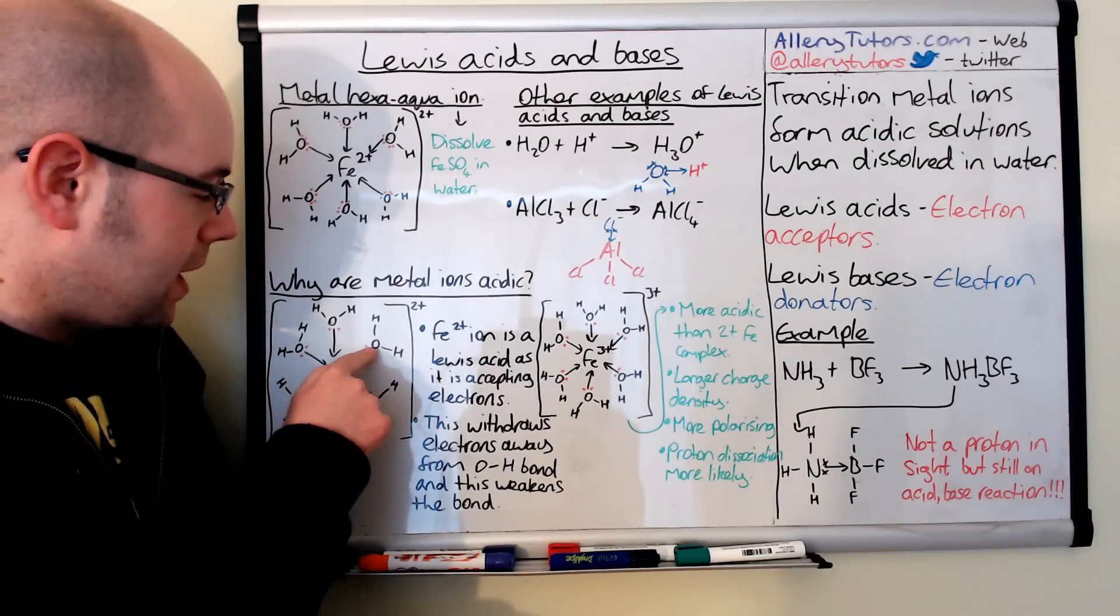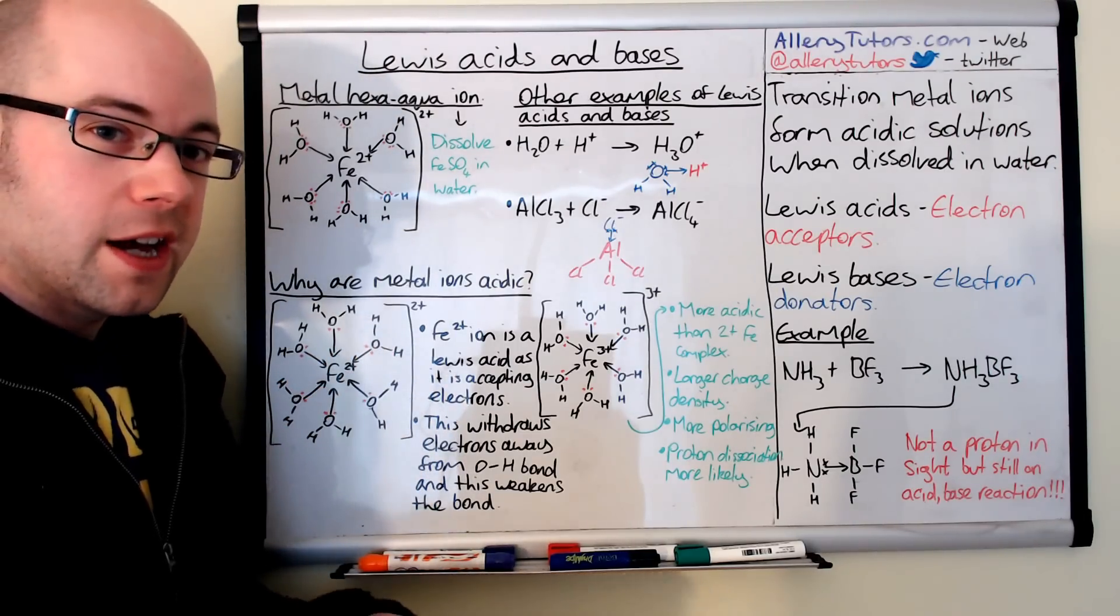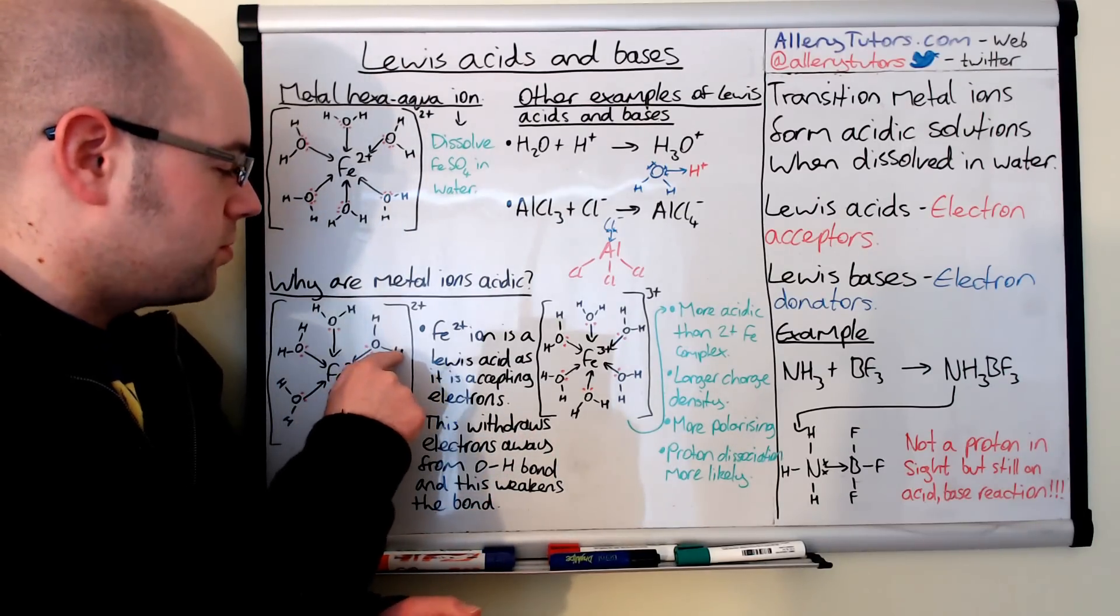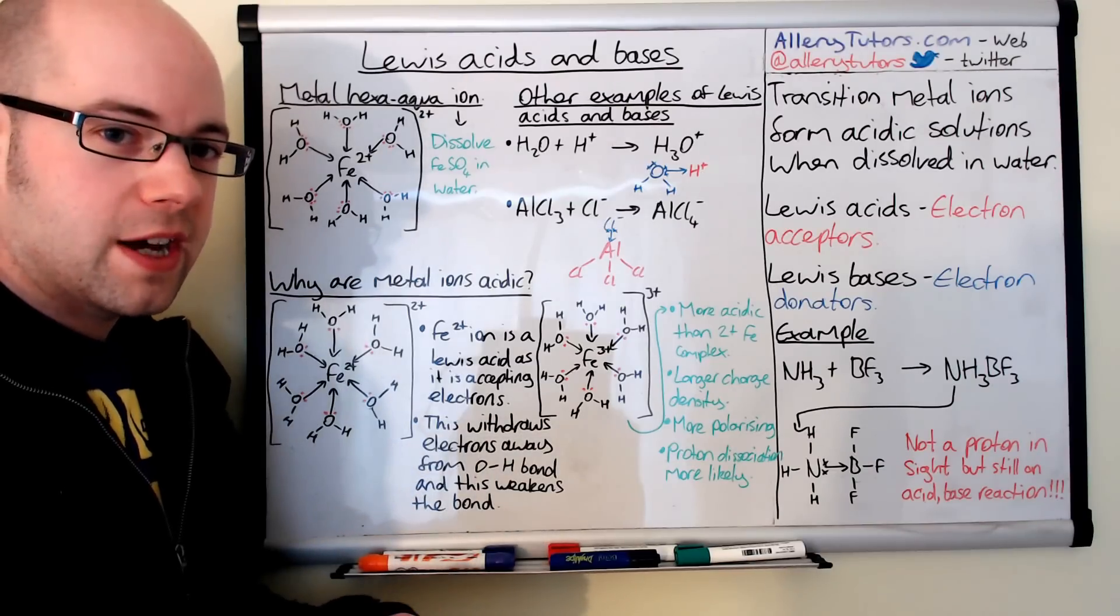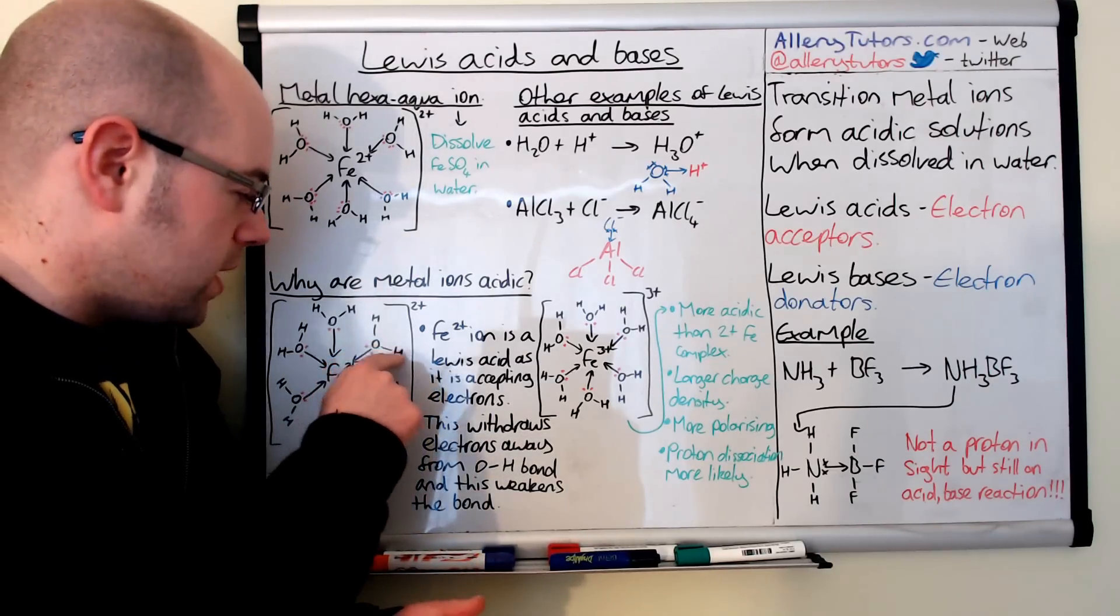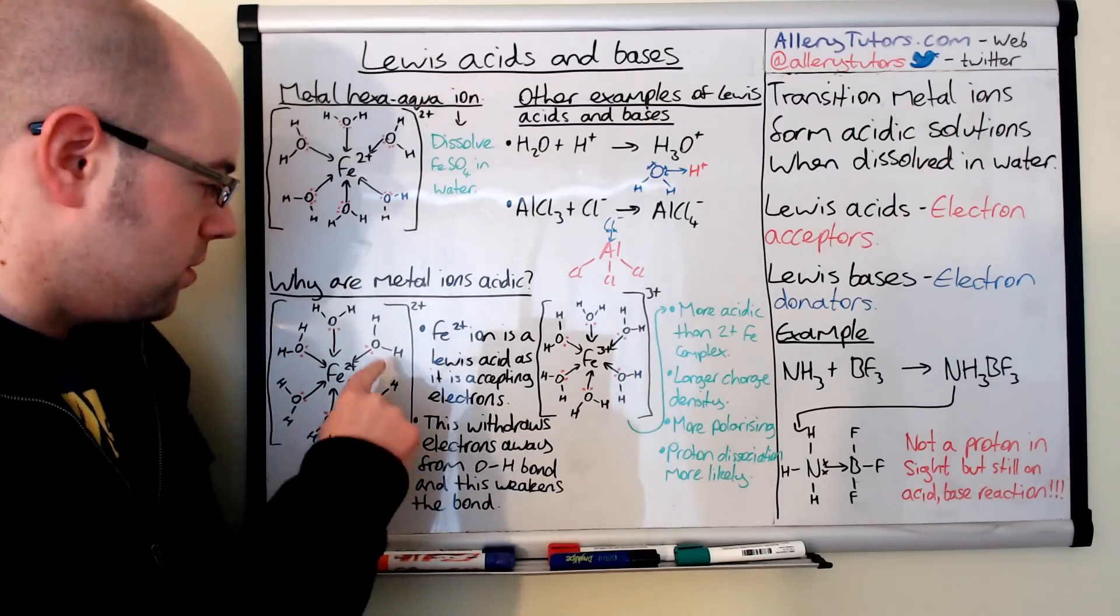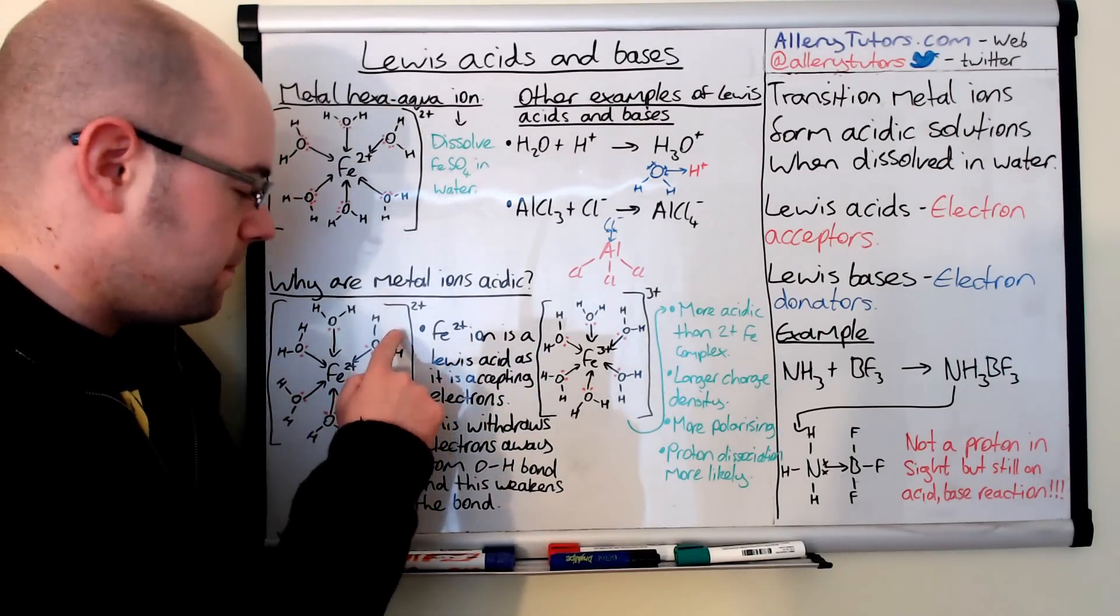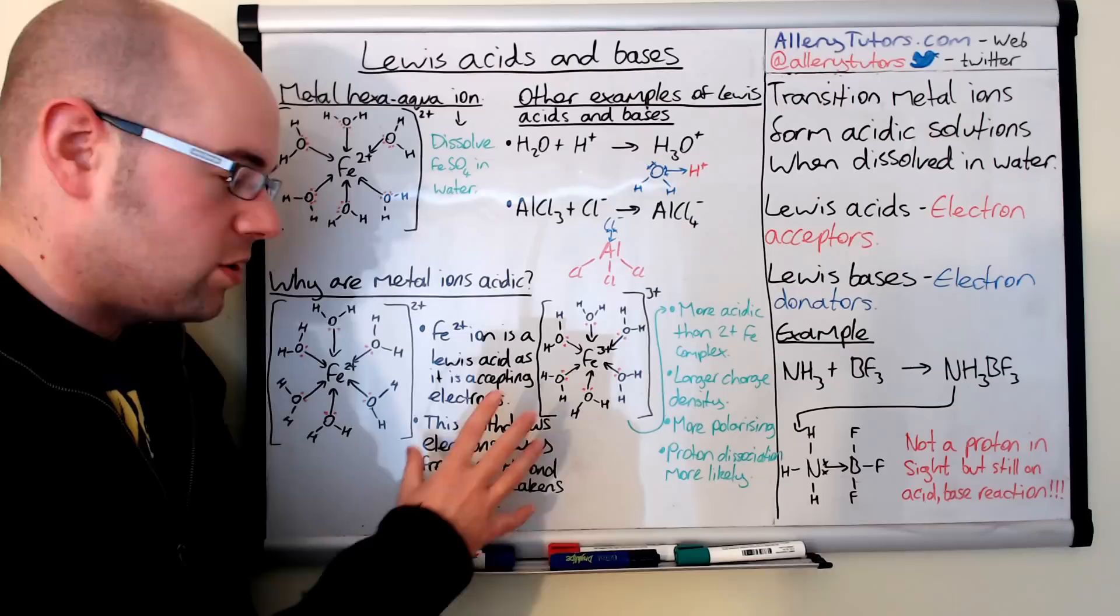Because the electrons have been pulled further in towards the metal ion, there's less electrons left on the whole water molecule. There's a knock-on effect—we call this a polarizing effect—where the electrons are drawn from the hydrogen onto the oxygen because oxygen is electronegative. As a result, this weakens this OH bond and means this proton is very likely to effectively drop off. We call that deprotonation, removing the proton and donating it into the solution.